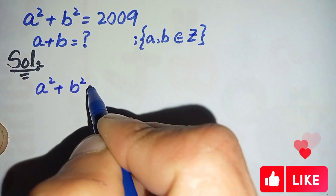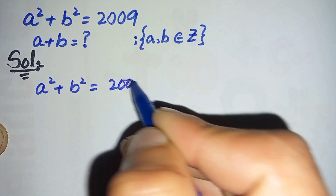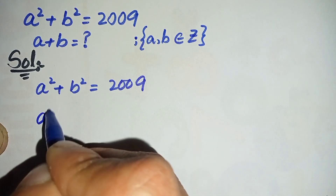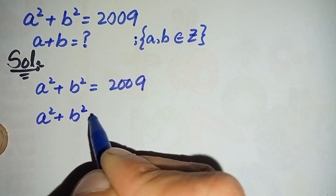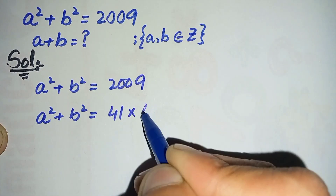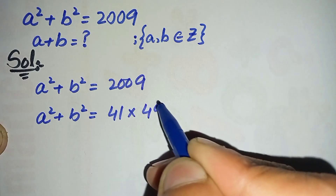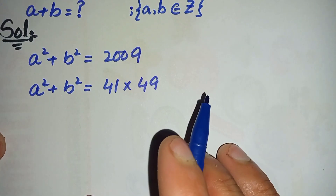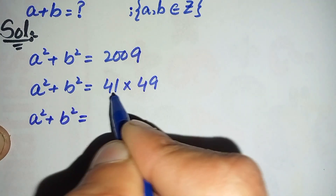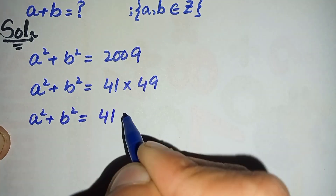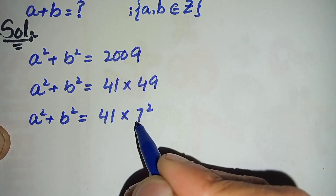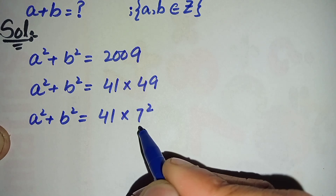First of all, we will factorize the right hand side. We can write 2009 as 41 times 49. In the next step, we will change 49 to its exponential form. So a squared plus b squared is equal to 41 times 49, and 49 can be written as 7 squared. Note that 41 is a prime number and cannot be factorized further.